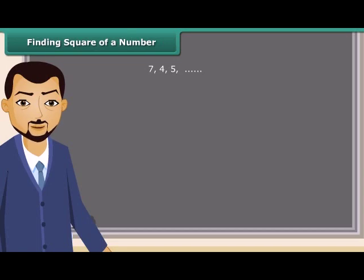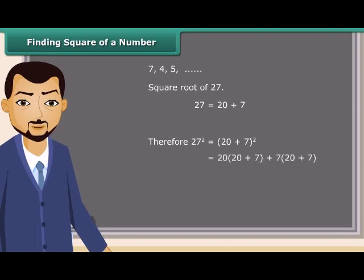But is it easy to find the square of 27 so quickly? Let us find how we may find the square of 27. We know 27 is a sum of 20 and 7. Therefore, a square of 27 is equal to (20 + 7) whole square, which equals 20² + 20×7 + 7×20 + 7², which equals 400 + 140 + 140 + 49, which equals 729.